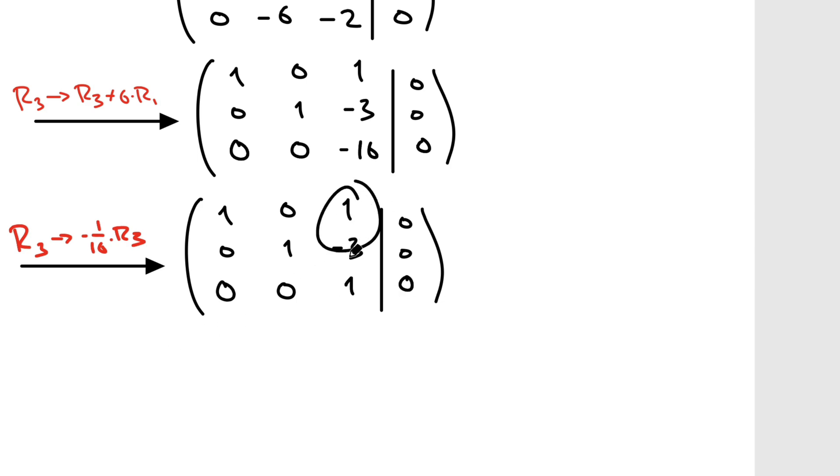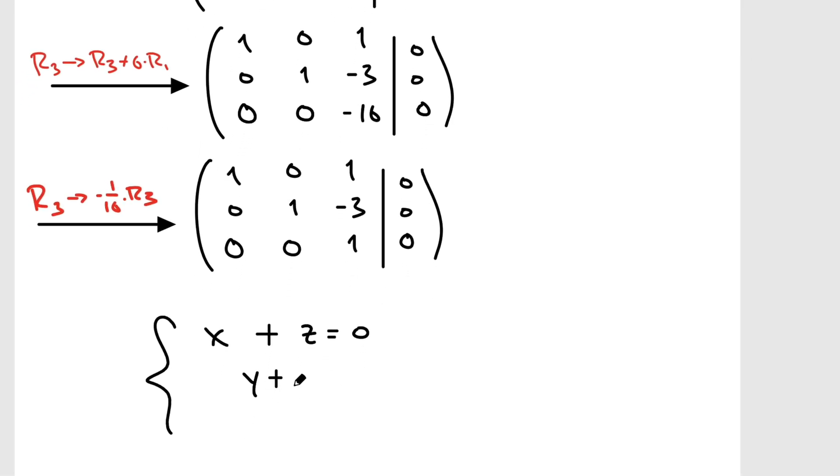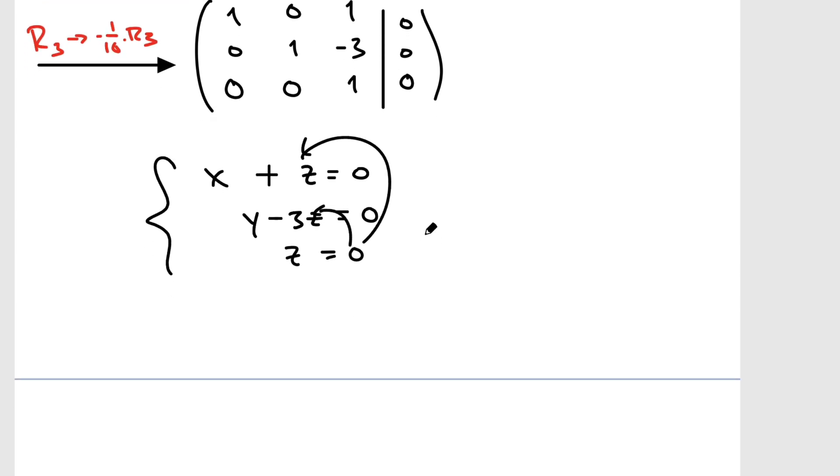So yeah, we're only going to have one solution here. I can see this already. Okay. There's many ways to explain this. For instance, this has one solution. If we want to continue just a little bit more, I can do, right. What we can do is the following. I mean, at this point, it's obvious that there's one solution. So R3 becomes negative one over 16 R3.